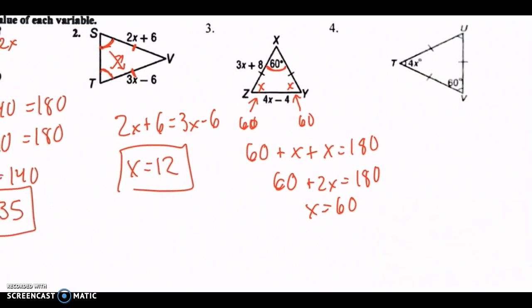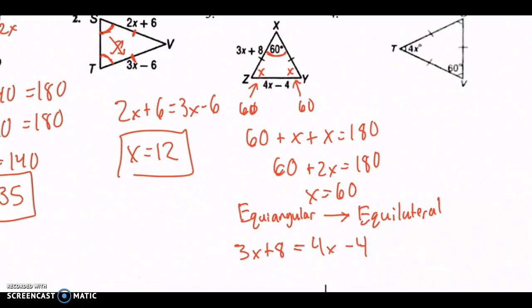And so once you have that, once you know that they're all equal angles, equal angular will lead to the fact that the triangle is equilateral, which will make all sides equal. So now I can set 3x plus 8 equals 4x minus 4. And this should get you x equals 12.